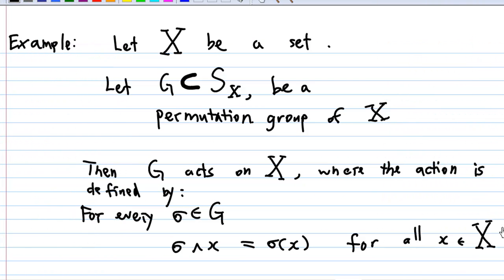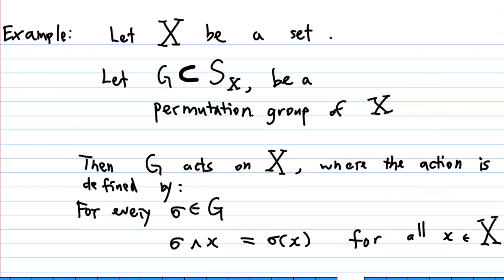Now, can we generalize this example? According to John Fraleigh's text, Section 16, there is one example: let X be a set and let G be a permutation group of X, meaning G consists of permutations on X and forms a group. Then G acts on X, where the action is defined by: for every sigma in G, sigma * x is defined as the image of x under sigma, for all x in the set X.